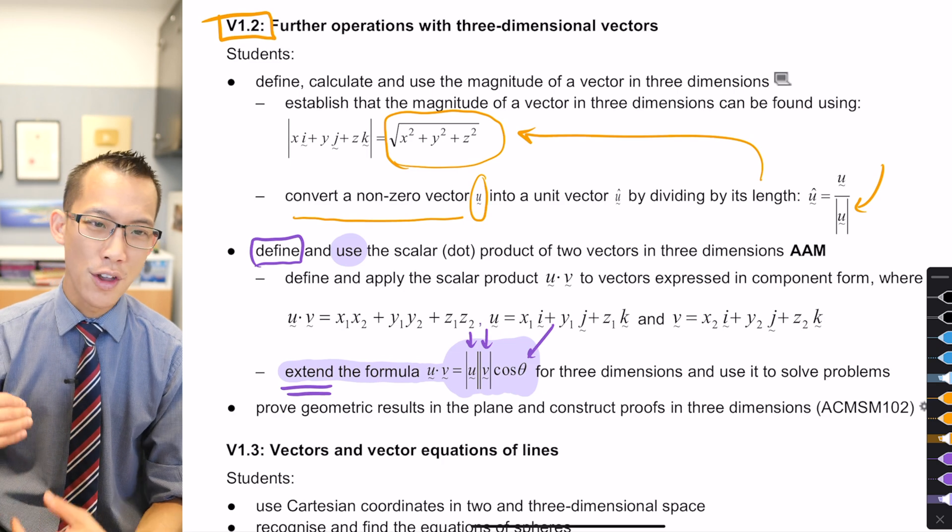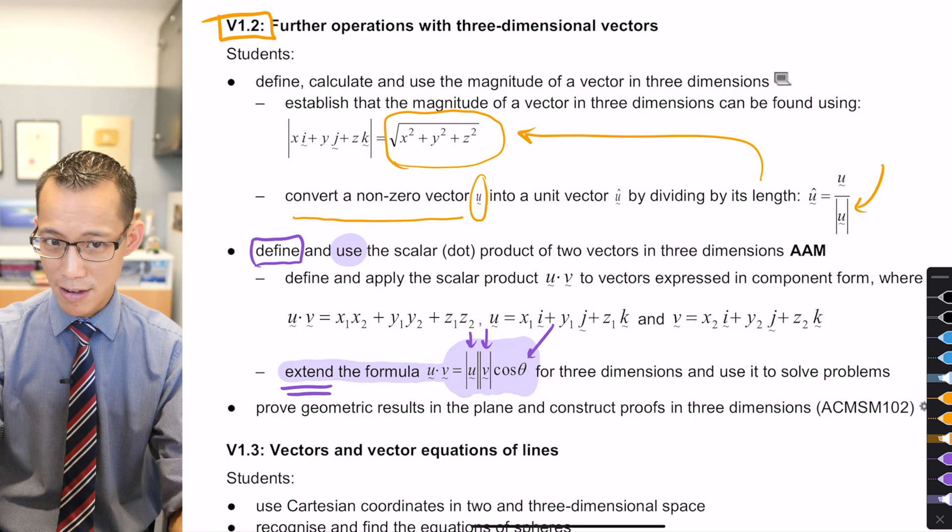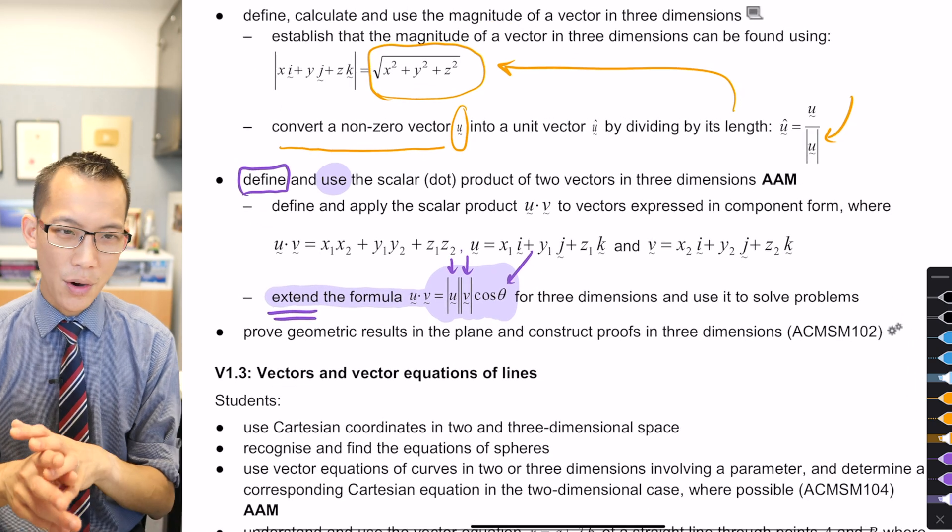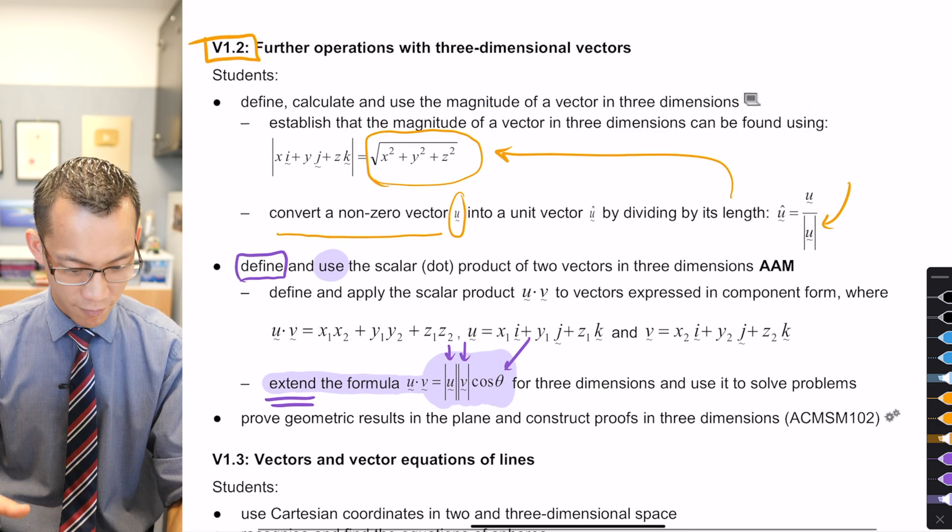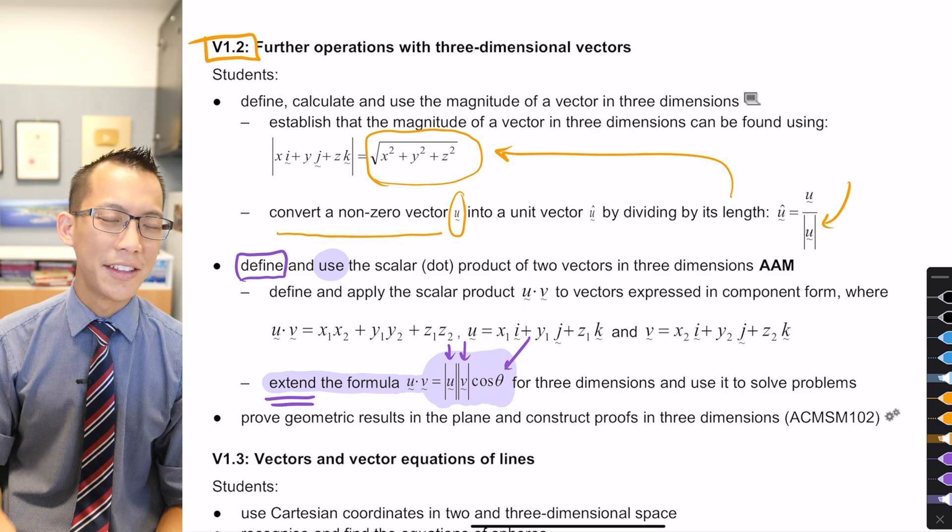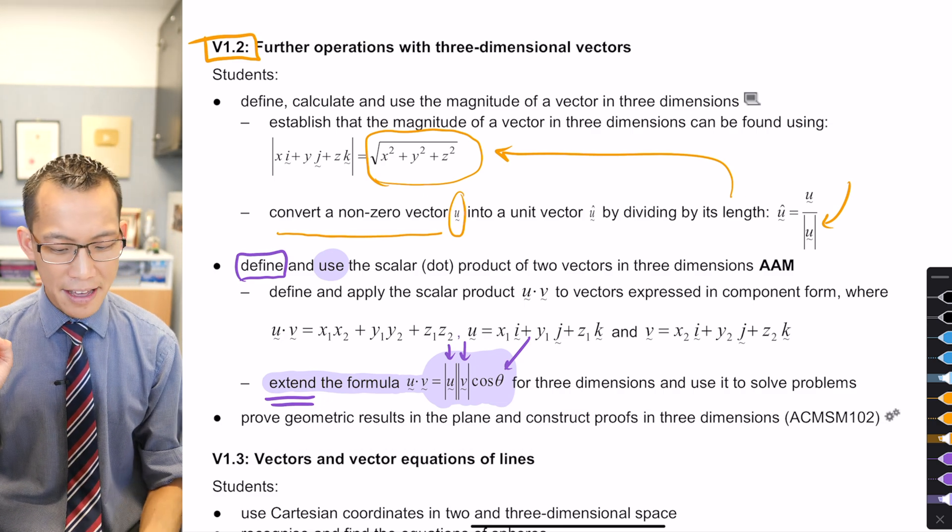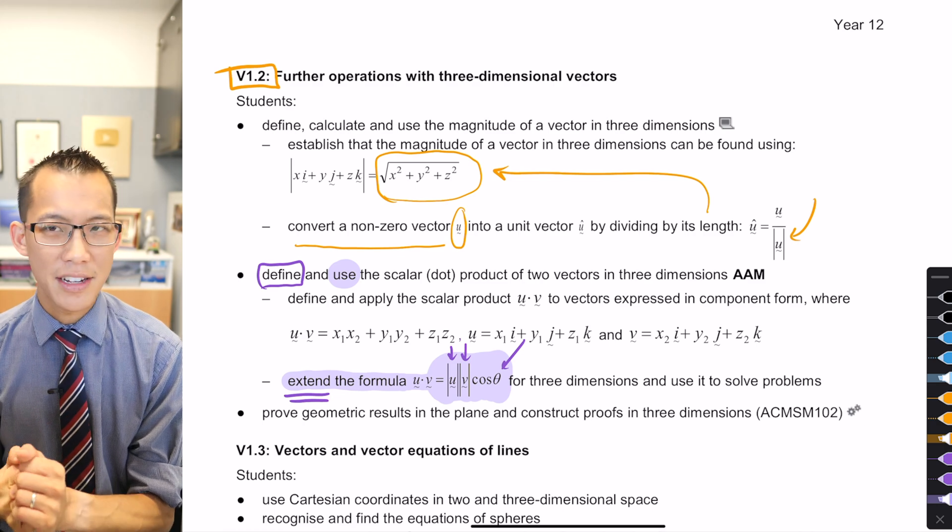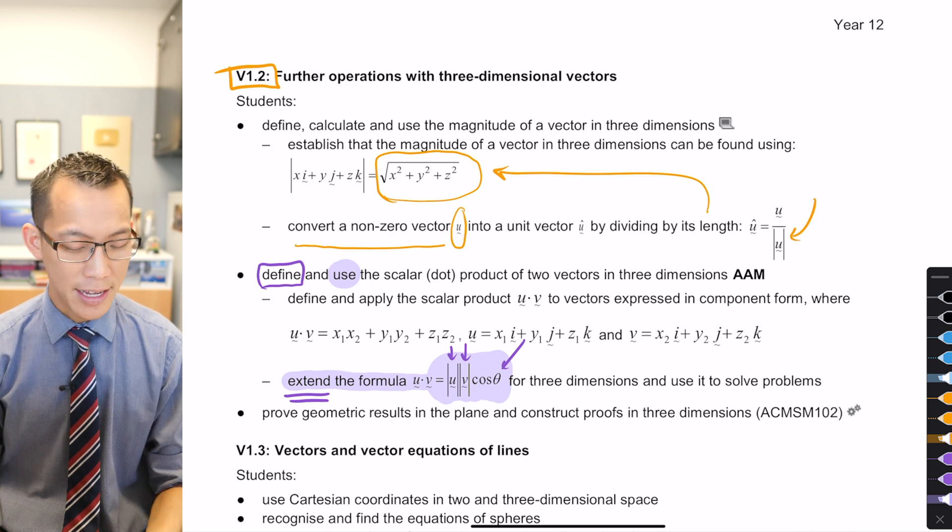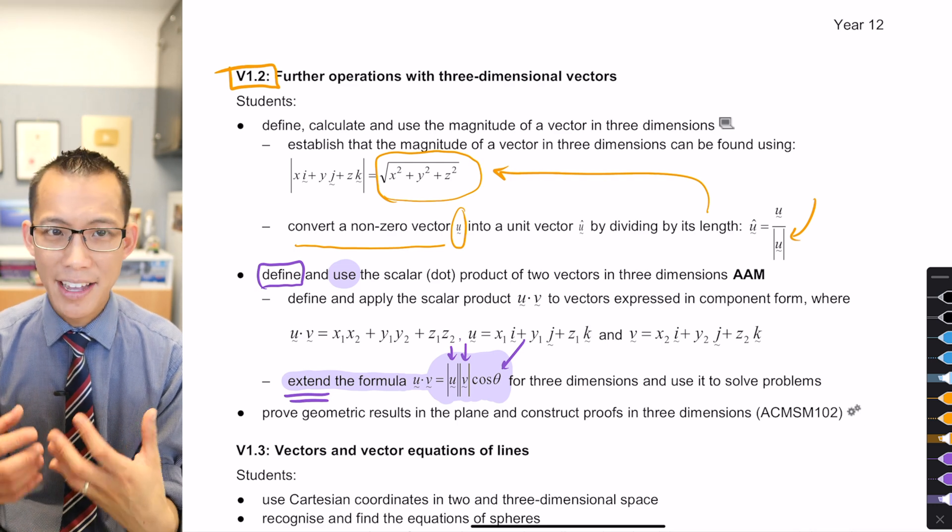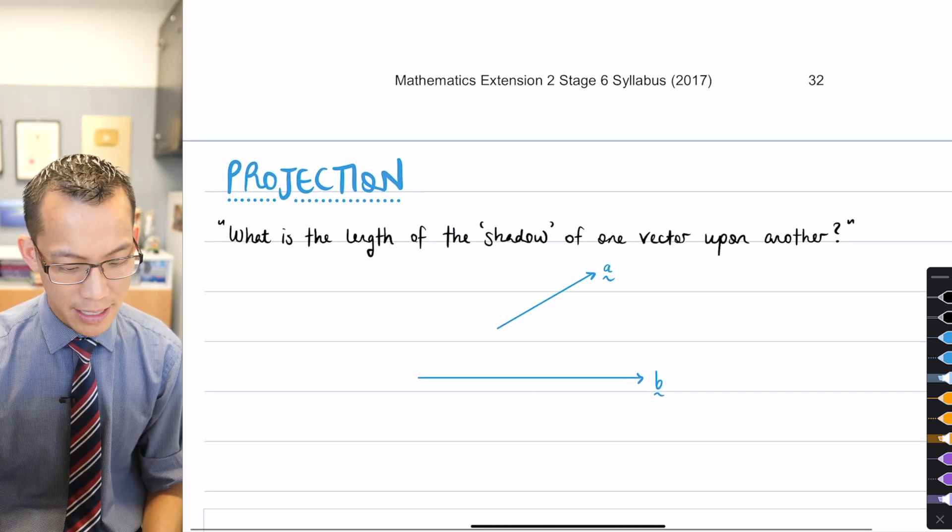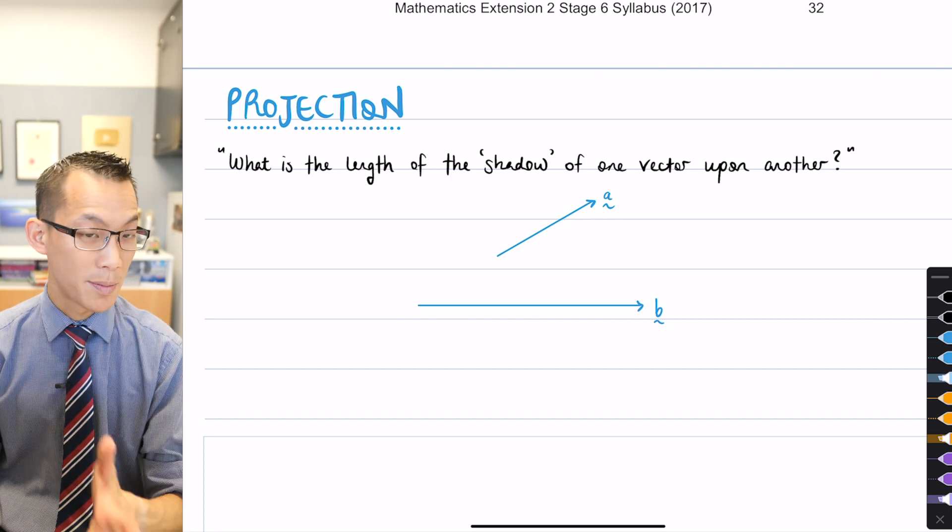This week, we have been looking through V1.2, these further operations, and you can see the things that we've covered so far. Now, we're kind of going to finish up with V1.2 today, which will pave the way for vectors and vector equations of lines next week. Now, the thing that we're going to do today is a little bit like, remember I told you about ratio division. Ratio division doesn't explicitly come up anywhere here, but it's a really great way to learn some of the skills that the syllabus wants of us, right?